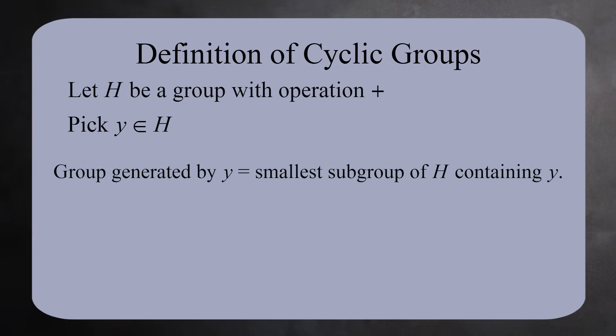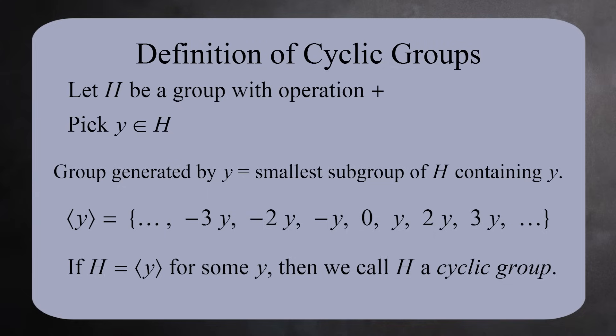It's worth taking a moment to repeat this definition using additive notation. Let H be a group, and pick an element Y in H. The group generated by Y is the smallest subgroup of H containing Y. It must contain Y, its inverse negative Y, and the identity element 0. And to be a group, it must contain all positive and negative multiples of Y. If H can be generated by an element Y, then we say H is a cyclic group.